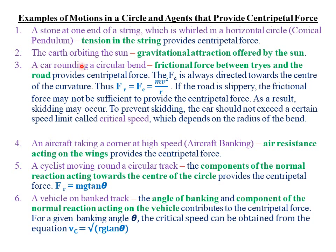The third case is a car rounding a circular bend. The agent that provides the centripetal force is the frictional force between the tires and the road. Remember, when there is no friction, the vehicle will simply slide off. You need the frictional force between the road and the tires in order for that vehicle to be maintained rotating in a circular path.